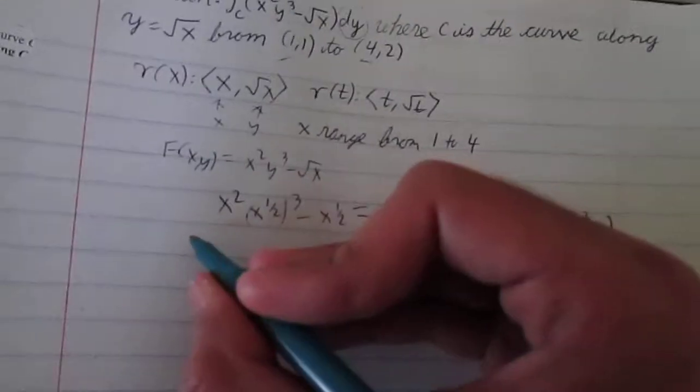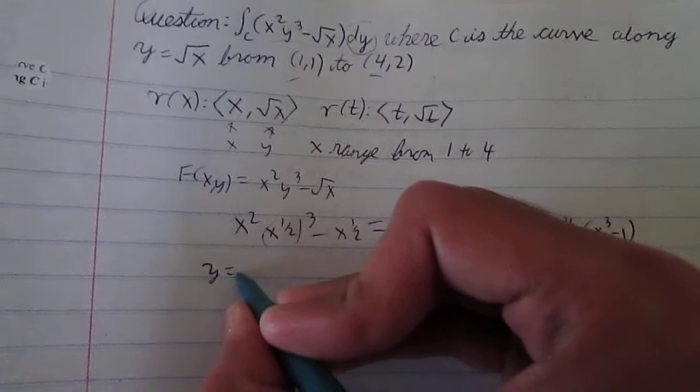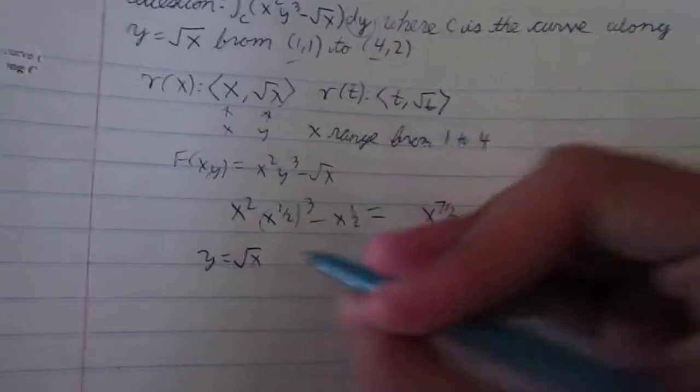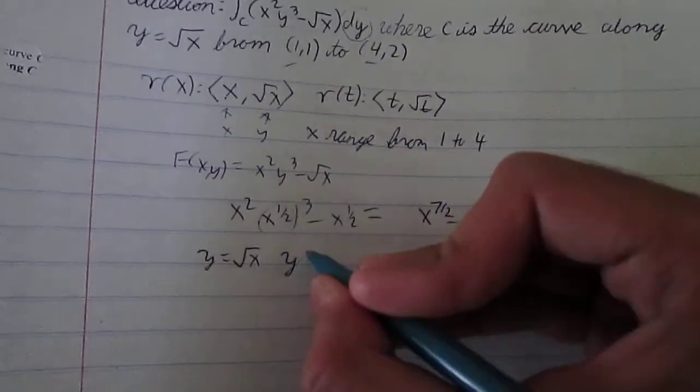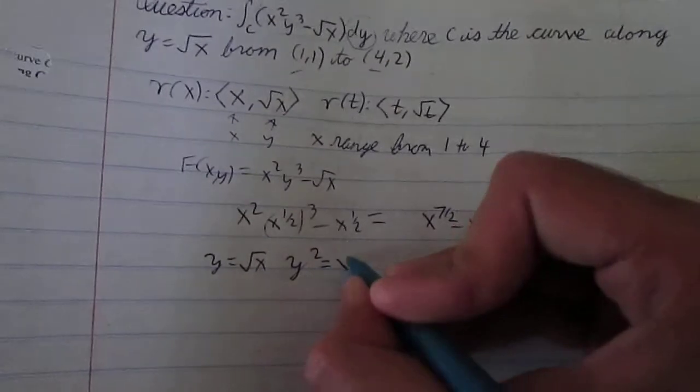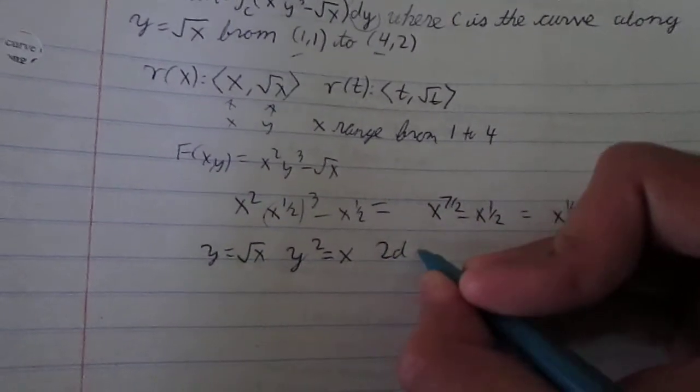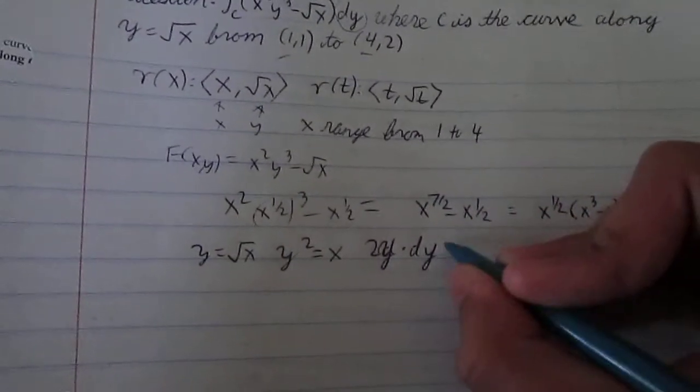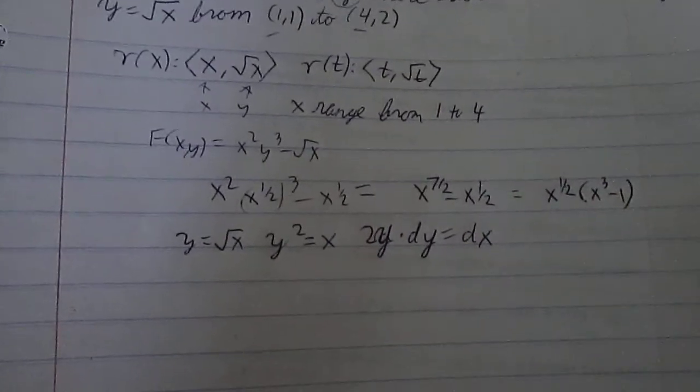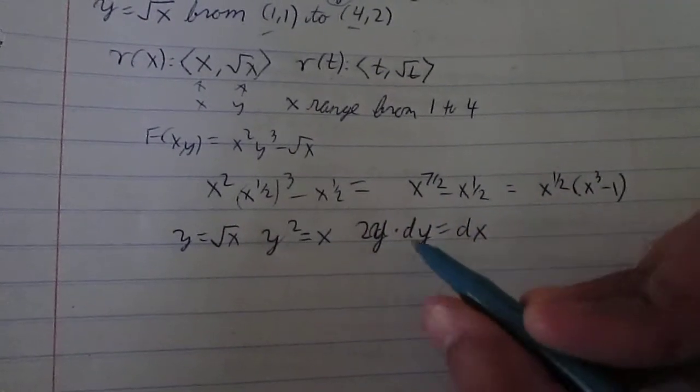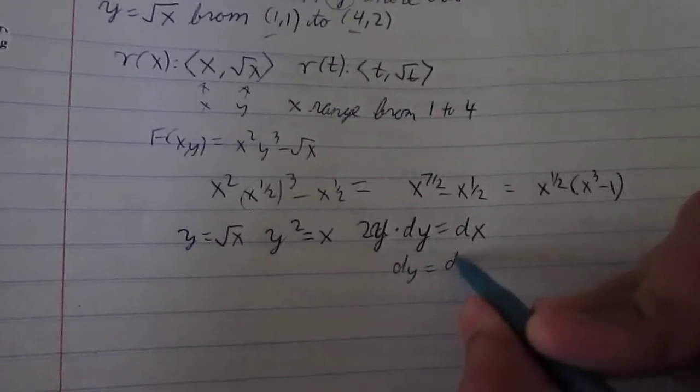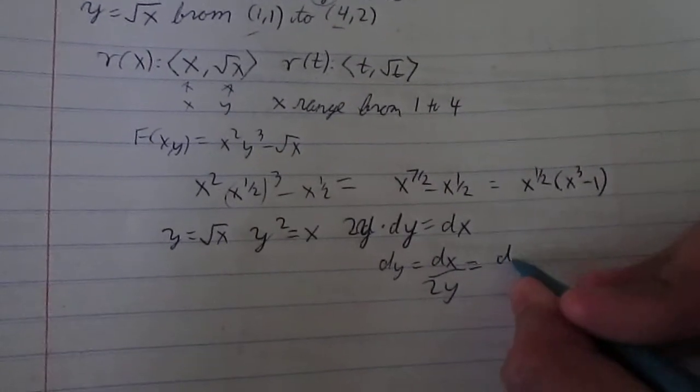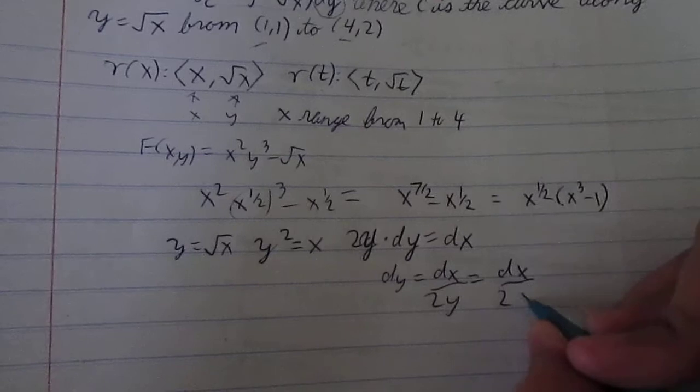So, how do we do that? Well, y equals square root of x. I mean, we could just differentiate it, but just be fancy and use implicit differentiation. So, y squared equals x. So, 2y times dy would equal to dx. I differentiated both sides. So, now, what is dy? dy is dx over 2y.